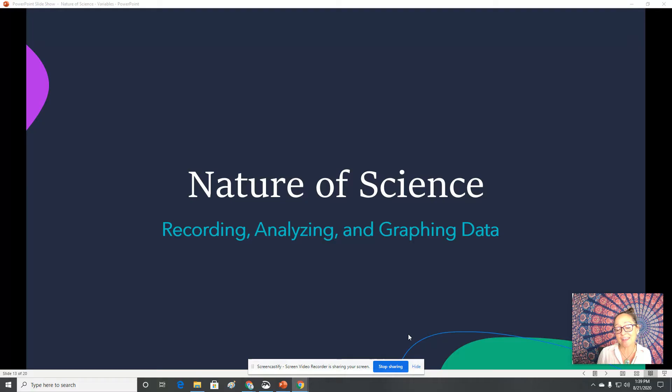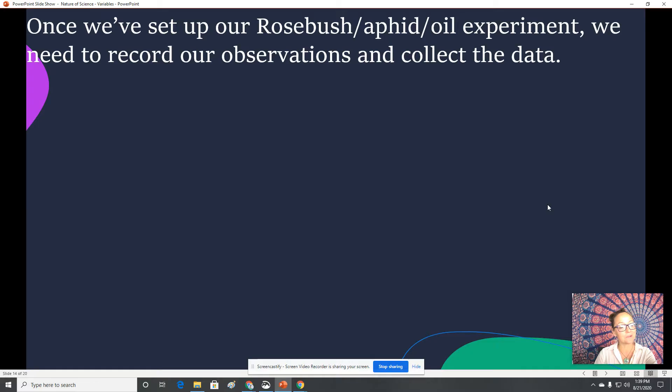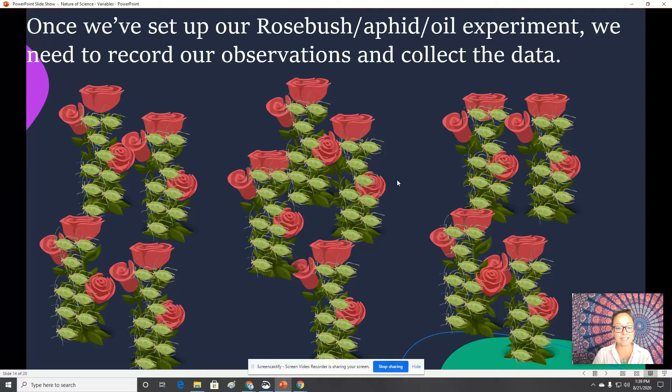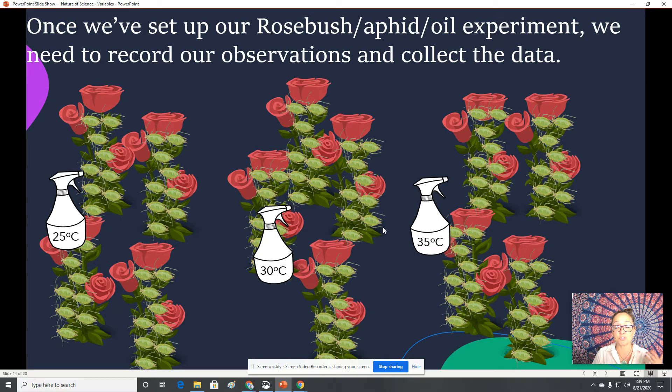In this video we're going to look at how we can record our data and how we can graph our data during an experiment. So what we're going to start with is we're going to revisit that rosebush aphid and oil experiment that I've been talking about in my last two videos on the scientific method. And so we put 40 aphids onto each of our three experimental groups with the different temperatures of coconut oil.